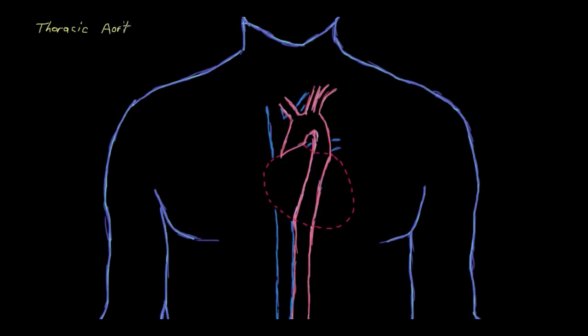What is a thoracic aortic aneurysm? Well, let's break that down. An aneurysm is a permanent, localized dilation of something, in this case of the aorta, which is the main artery in our bodies.